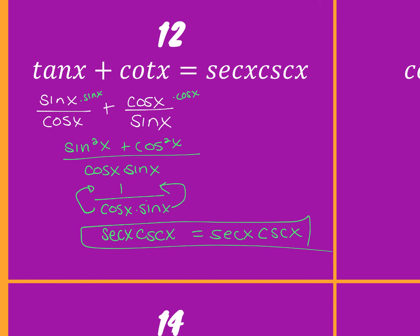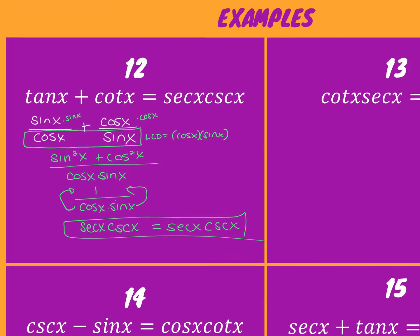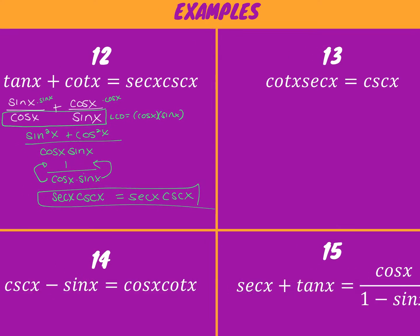I don't understand what you did when you multiplied the cosine and the sine in the first step. To get a least common denominator here, because they're different, it would be the product of them both — it would be cosine times sine. So whatever's missing from the bottom, you want to multiply the numerator by. Okay, thank you.